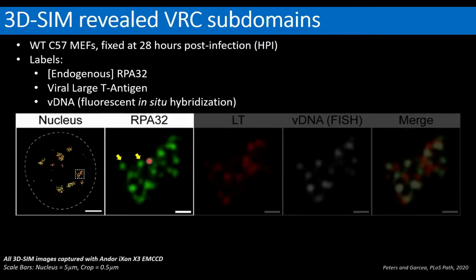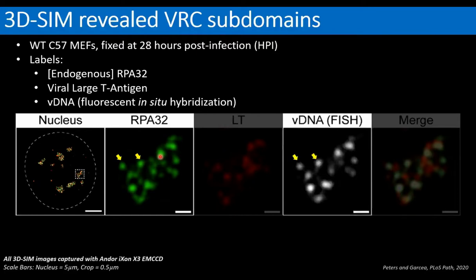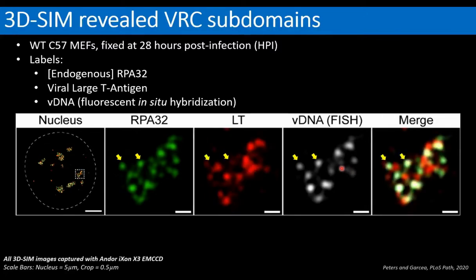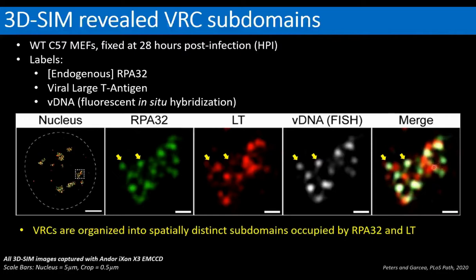In a typical infected cell at this time point, I observed RPA foci consistent with earlier results from the transgenic cell line. Interestingly, the FISH signal overlapped viral DNA very well, but large T antigen did not. These results indicated that murine polyomavirus replication centers are organized into spatially distinct subdomains occupied by RPA32 and large T antigen — compartmentalization that has been observed in other DNA viruses, but never before in polyomaviruses.